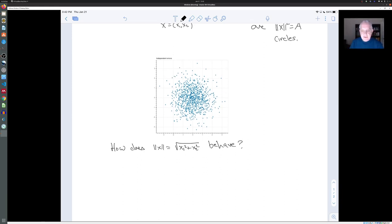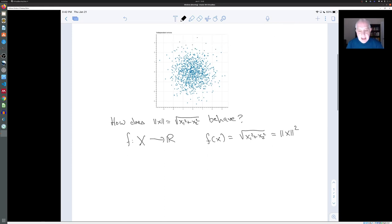And this is an example of a random variable. Because as I mentioned, a random variable is a measurement or a function. So we can consider the function from our space X to R, which is just F of X is the square root of X1² plus X2², which is norm X squared.